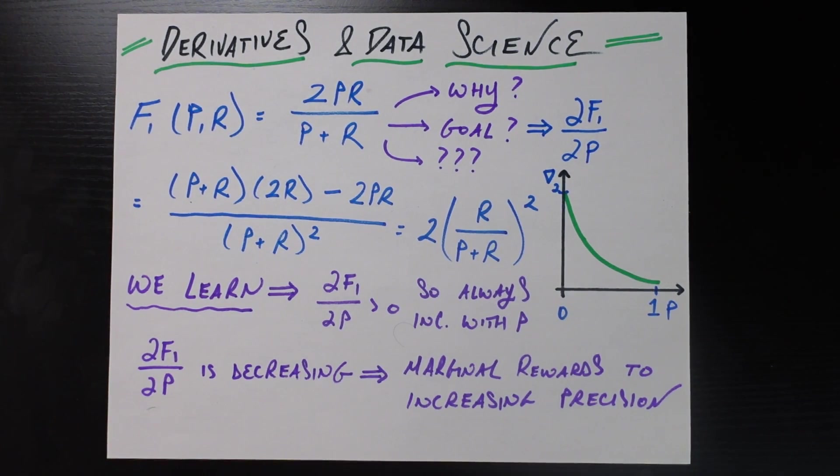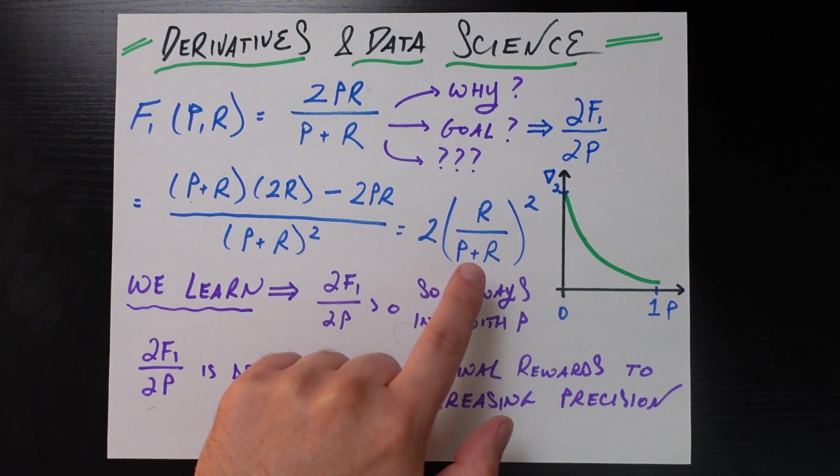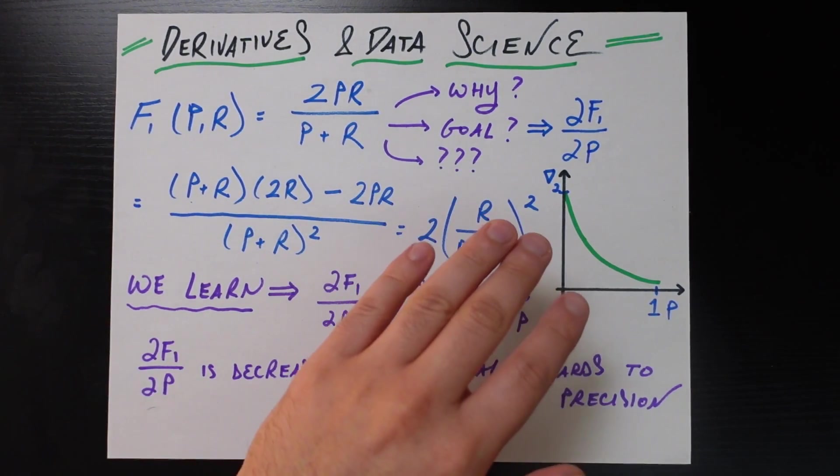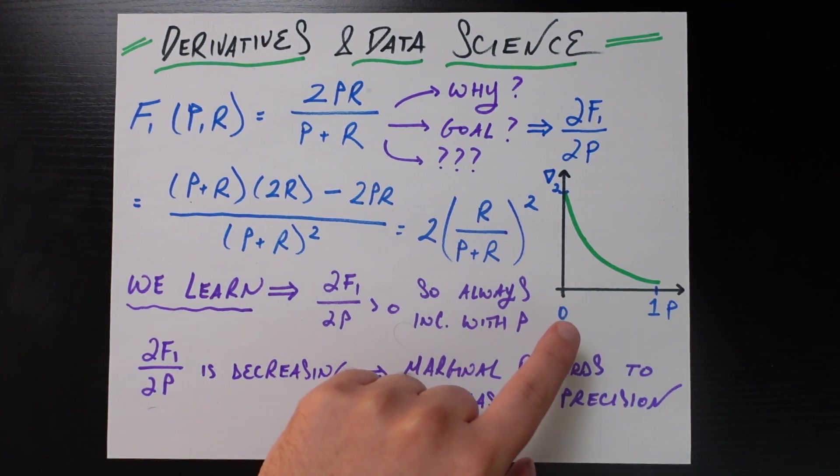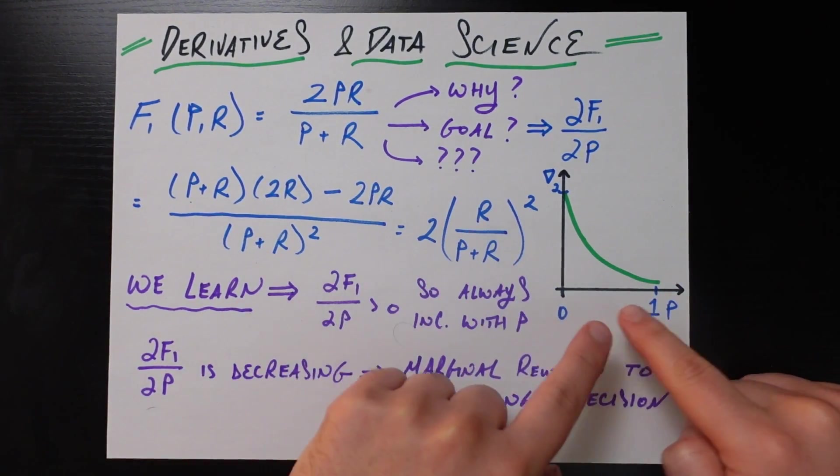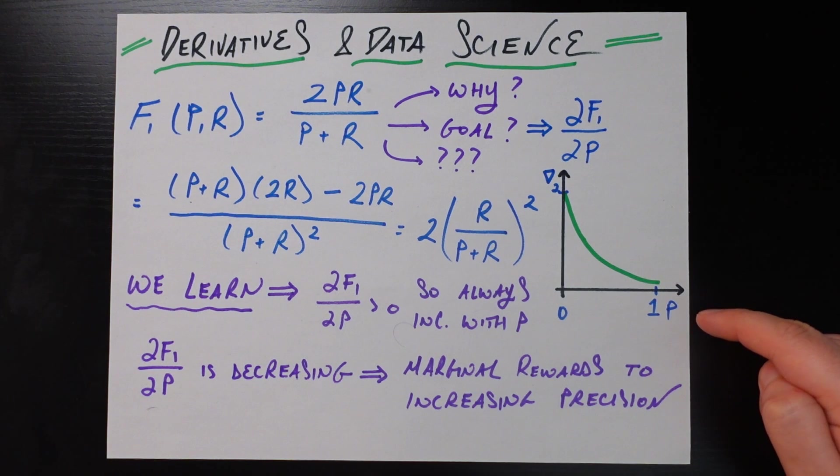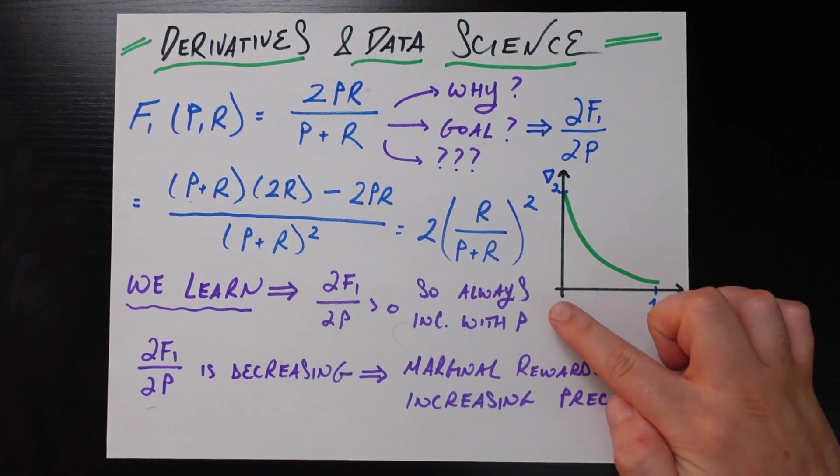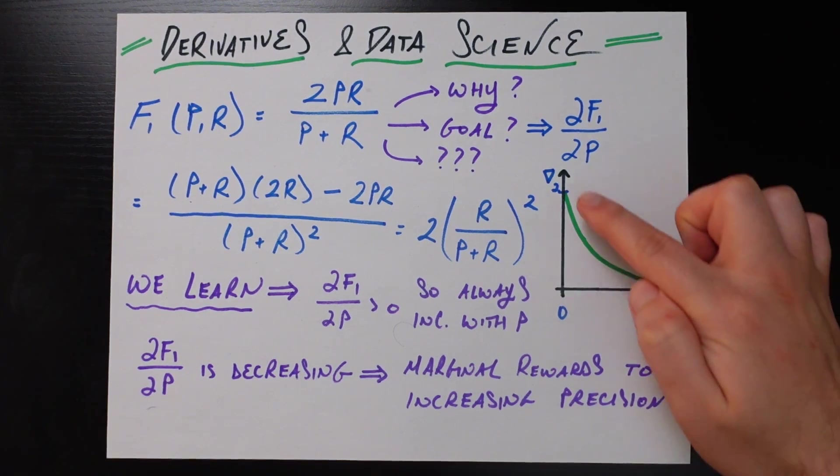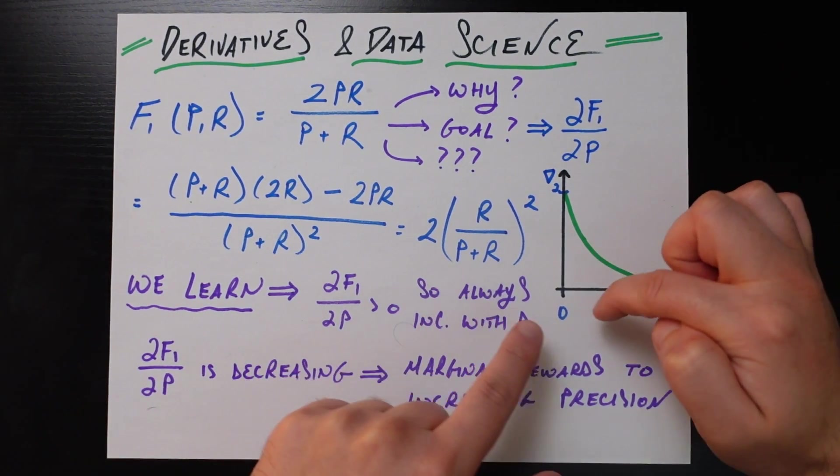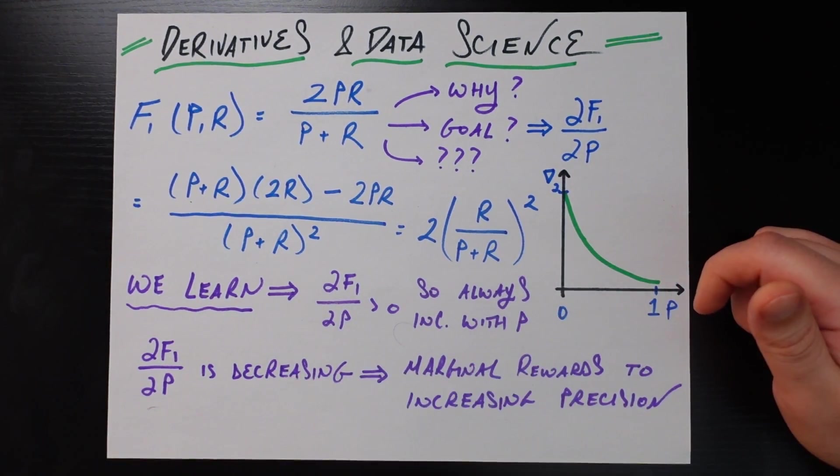Now the exact form, we don't need to read too much into it. What we should look into with this form is how does this form, this derivative that we just calculated, respond to changes in precision. So if I draw this formula as a plot basically right here, precision is a number that's allowed to range between 0 and the weakest precision to 1 for the best precision.